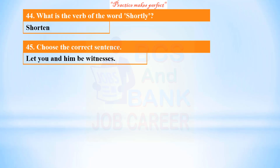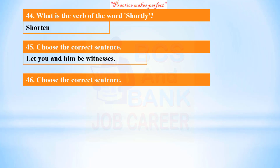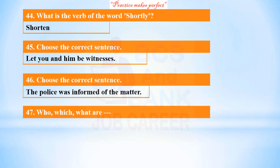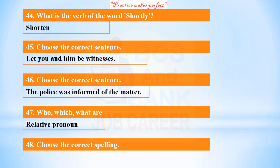Choose the correct sentence: 'The police were informed of the matter.' Who and what are relative pronouns. Choose the correct spelling: 'misspell.'